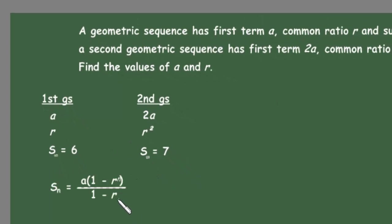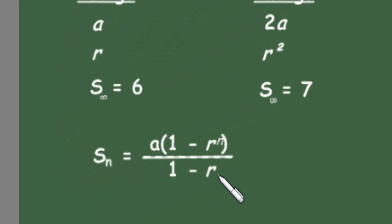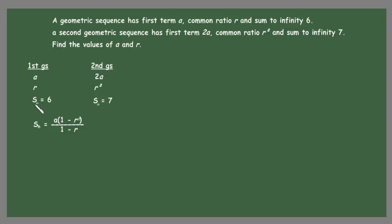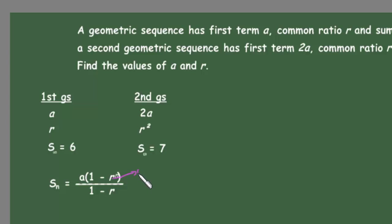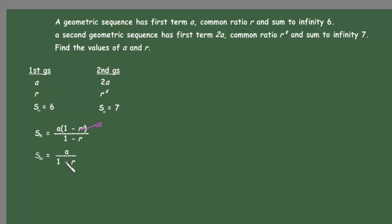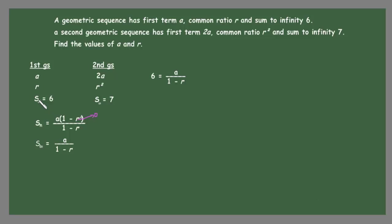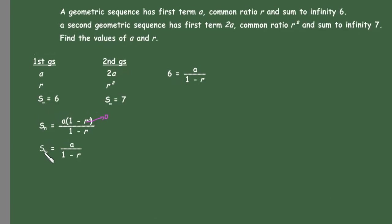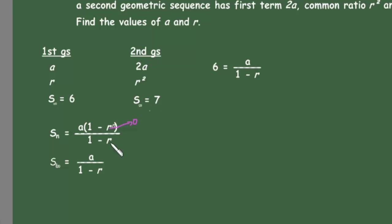Before continuing, let's look at the general formula for the sum of n terms of a geometric sequence, which is a times (1 minus r to the power of n) over (1 minus r). When talking about the sum to infinity, r to the power of n goes to 0, giving us S∞ = a over (1 minus r).